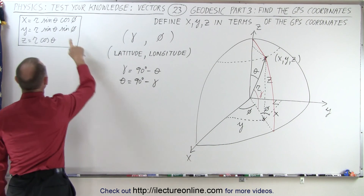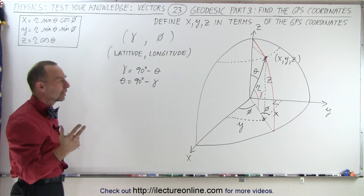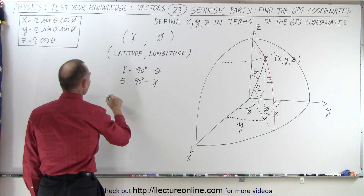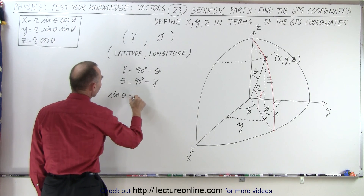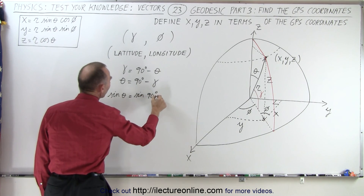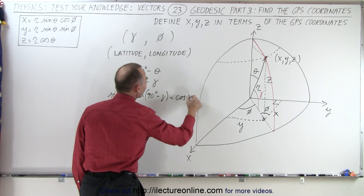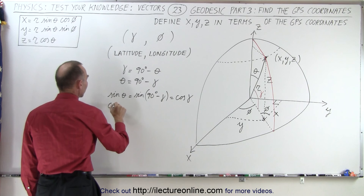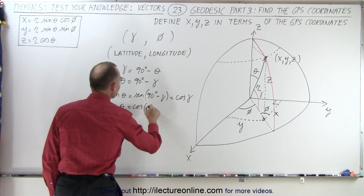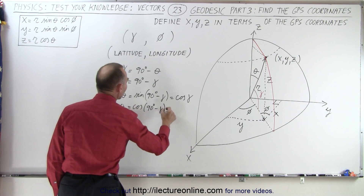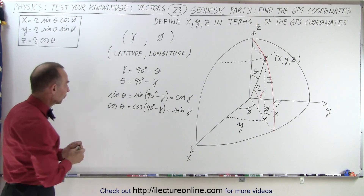What we're going to do is replace every theta by 90 minus lambda. If we think about it, the sine of theta equals the sine of (90° − lambda), which is the same as the cosine of lambda. And the cosine of theta equals the cosine of (90° − lambda), which is therefore equal to the sine of lambda. So to convert from theta to lambda, we convert sine to cosine and vice versa.